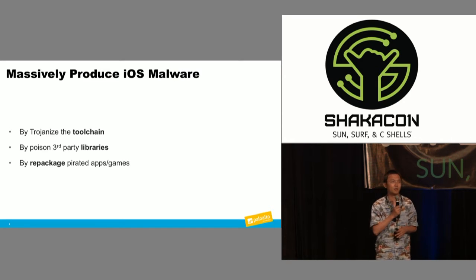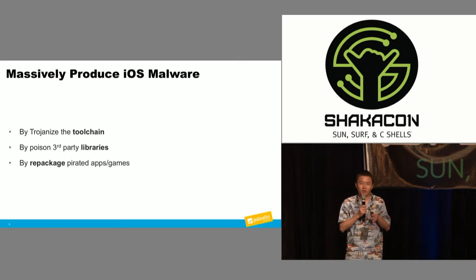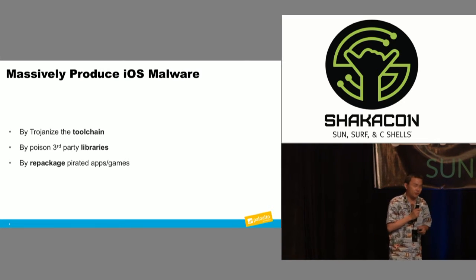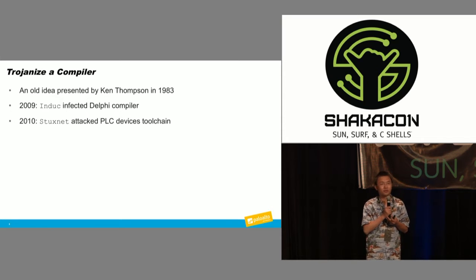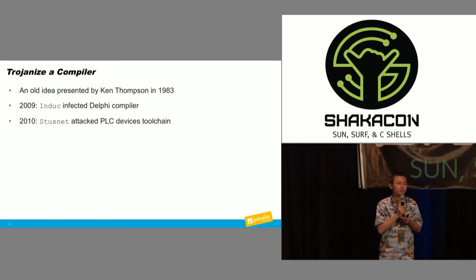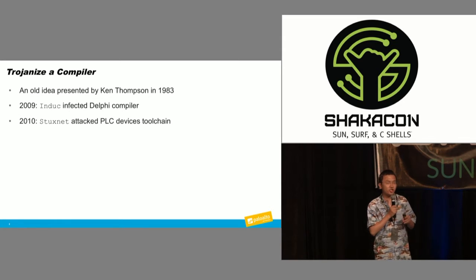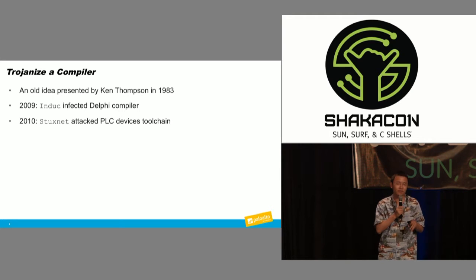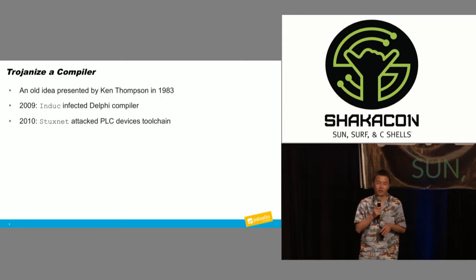The first topic is how to produce malware for non-jailbroken devices. You could produce a single malware on demand, but how could you massively produce them? The first technique is to trojanize a compiler. This is not a new idea — it was presented about 30 to 40 years ago by Ken Thompson in his Turing Award lecture. Ken Thompson trojanized the C language compiler so that each network server compiled by that trojanized compiler would accept a backdoor username and password.